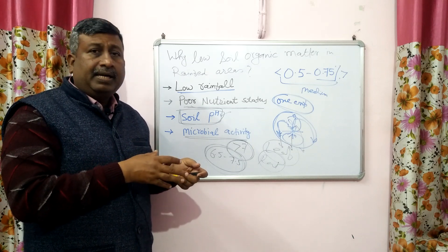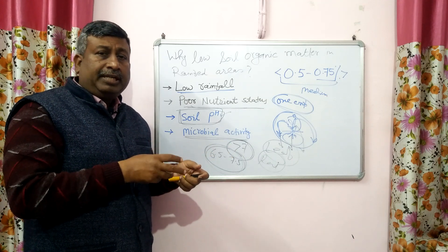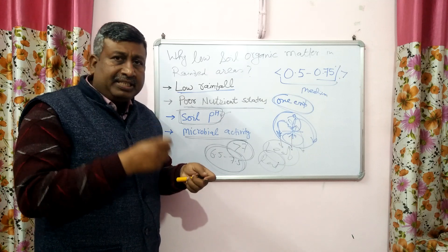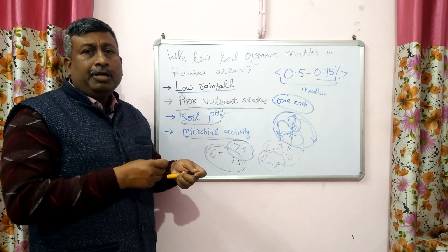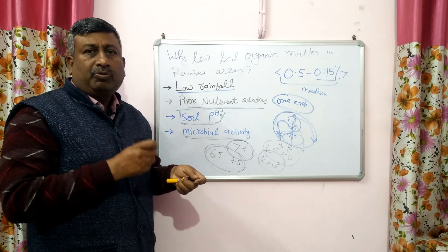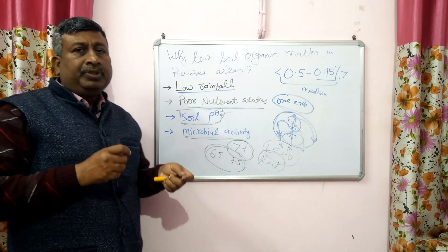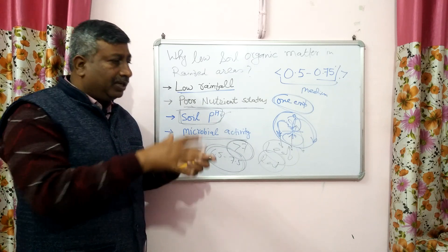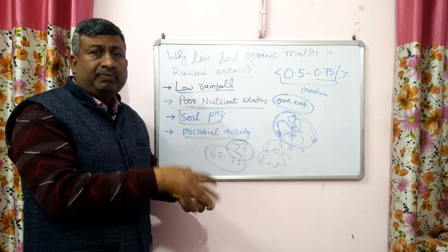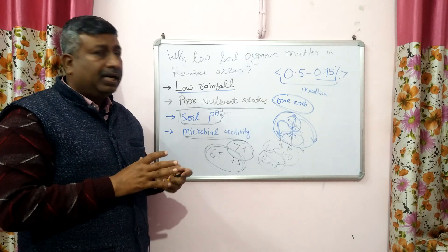Another factor is high temperature. Rain-fed areas are subjected to high temperature and high aridity. Because of high temperature, microbes cannot work properly and their enzymatic activity becomes very poor. Optimum moisture, optimum temperature, and optimum soil pH are all required for microbial activity. But in rain-fed areas, all three — moisture, temperature, and pH — are not suitable for microbial activity. This is the reason that leaf fall and roots are not properly decomposed or converted into organic matter, so organic matter content in rain-fed areas is low.